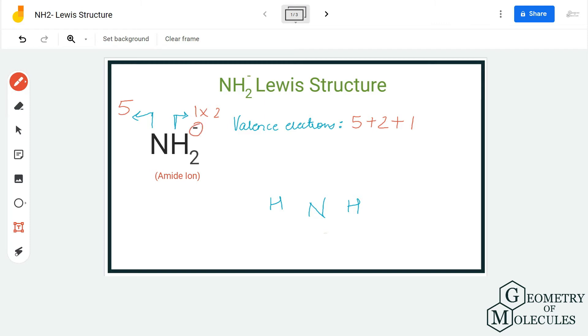In total, we have eight valence electrons for NH2 minus ion. Now nitrogen will take the central position and hydrogen atoms will be arranged around it like this. To show bonds between nitrogen and hydrogen, we are going to place a pair of electrons between nitrogen and hydrogen atoms.